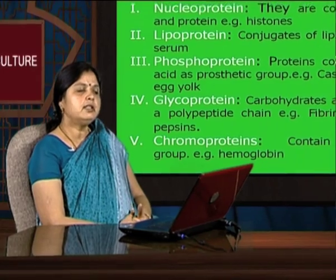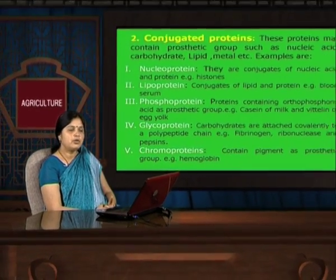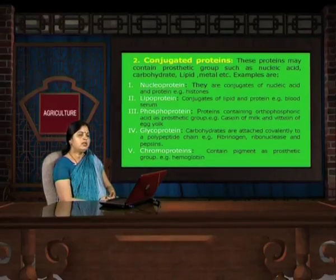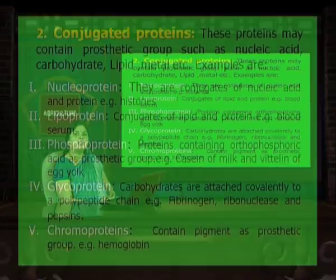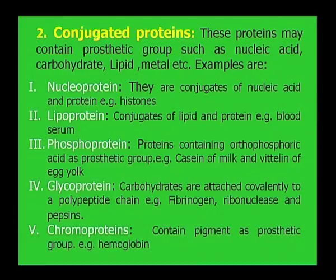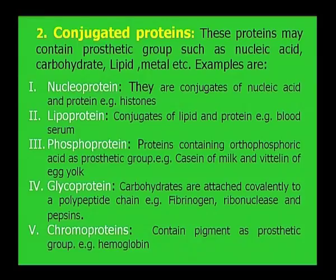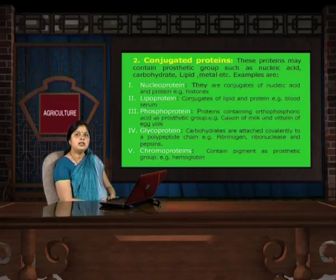Another class of protein is conjugated proteins. These proteins, in addition to amino acids, contain a prosthetic group such as nucleic acids, carbohydrate, lipid, metal, etc. The example of conjugated proteins are nucleoproteins. When proteins are conjugated with nucleic acids — which may be DNA and RNA — they are called nucleoproteins. An example of nucleoproteins is histones, present in the nucleus, playing an important role in genetic information.